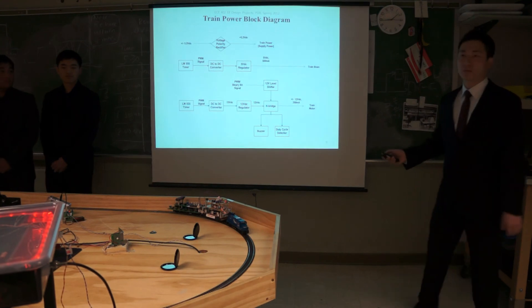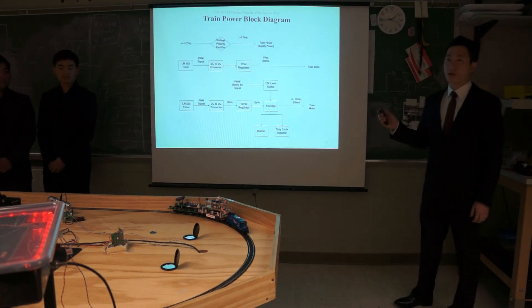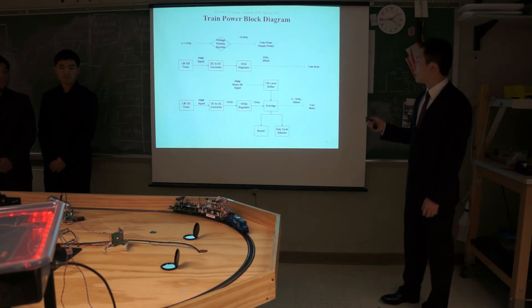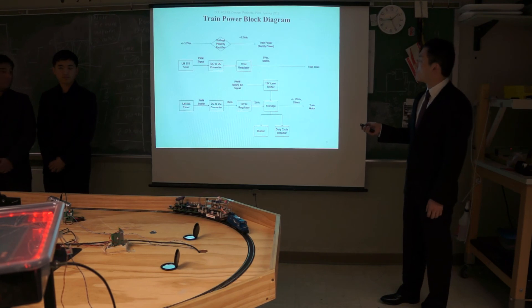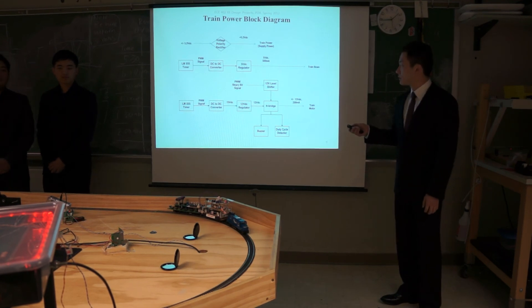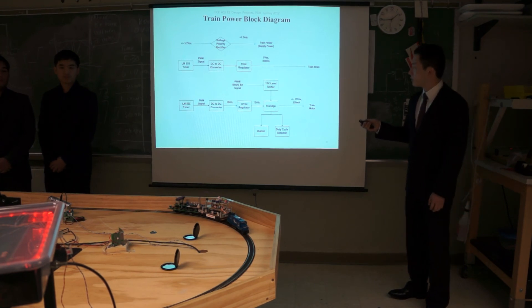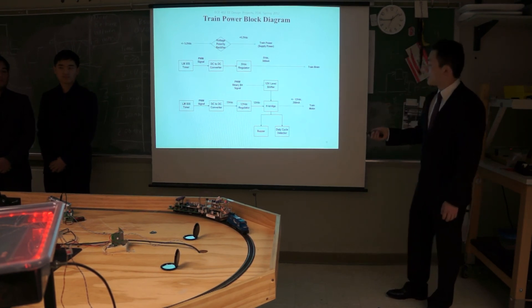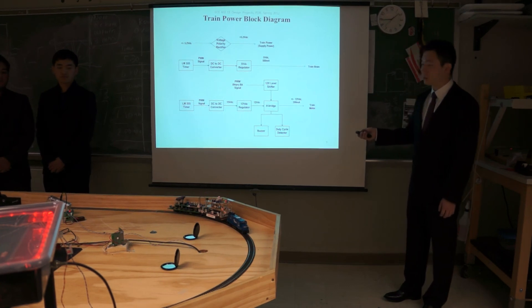This is train power block diagram. The purpose of this train power is to supply stable and custom power to the train power and train brain and also to the train motor. Basically I have two converters. One is for 5 volts and one is for 12 volts. I have a full H bridge. And I have two indicators. One is for the direction change and one is for the 3 second curve for speed.